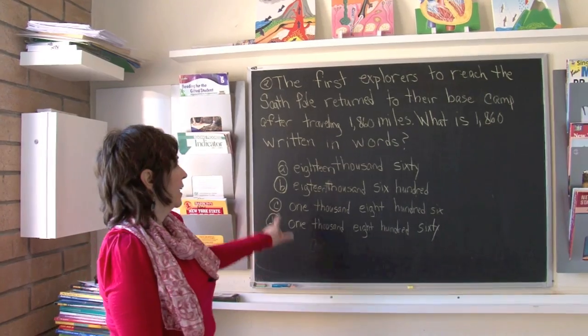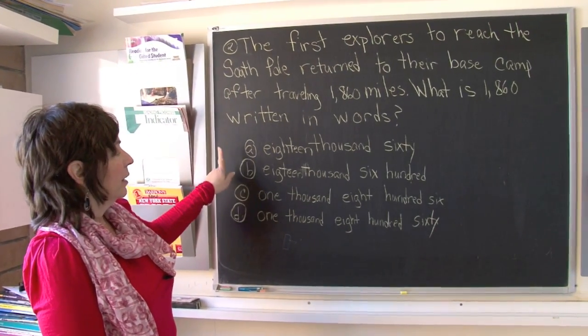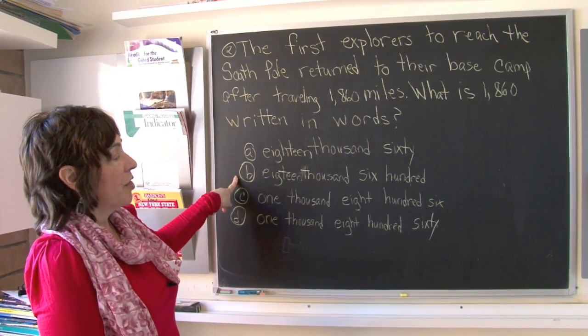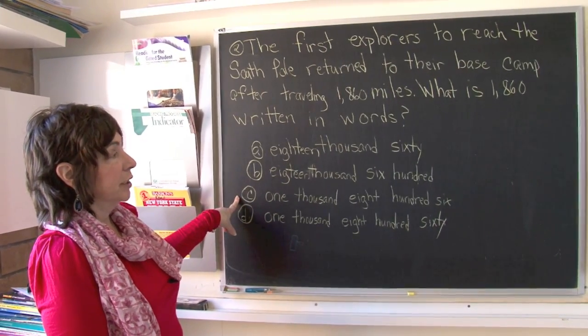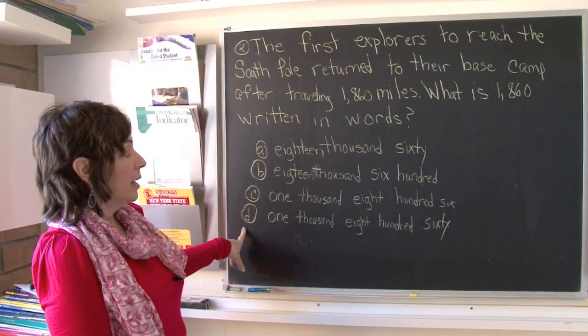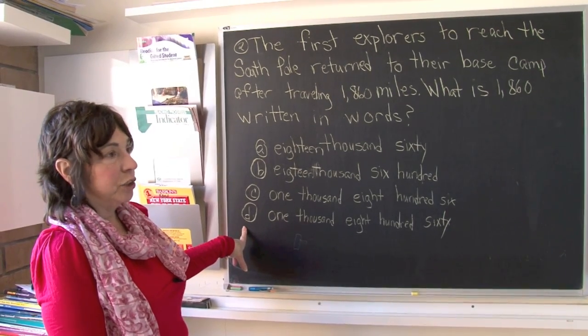Let's look at A: 18,060. Let's look at B: 18,600. C: 1,806. D: 1,860.